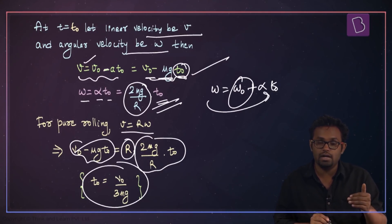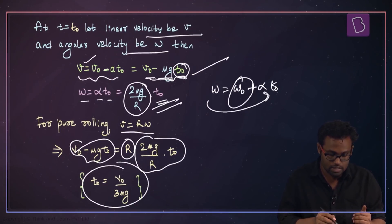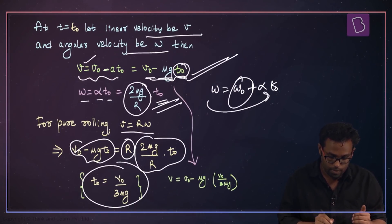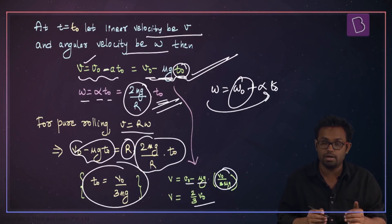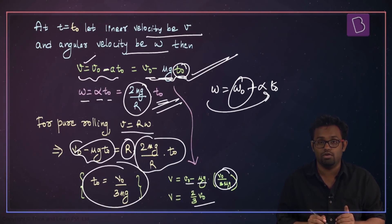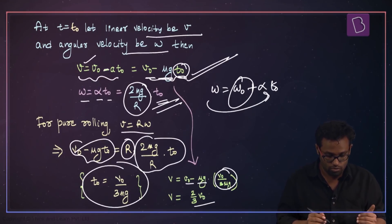To find the velocity v at t equal to t₀, plug the value of t₀ into the formula: v equals v₀ minus μg times t₀. You get v equals (2/3)v₀. So this is the velocity at time t equal to t₀.